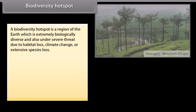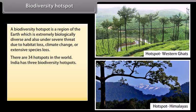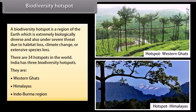Biodiversity Hotspot. A biodiversity hotspot is a region of the earth that is extremely biologically diverse and also under severe threat due to habitat loss, climate change, or extensive species loss. There are 34 hotspots in the world. India has three biodiversity hotspots: the Western Ghats, the Himalayas, and the Indo-Burma region.